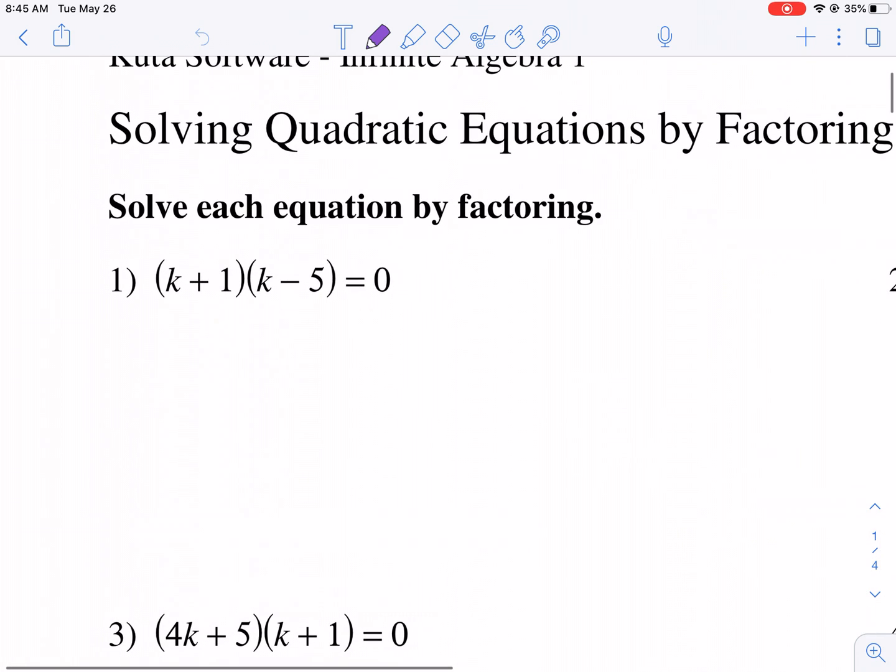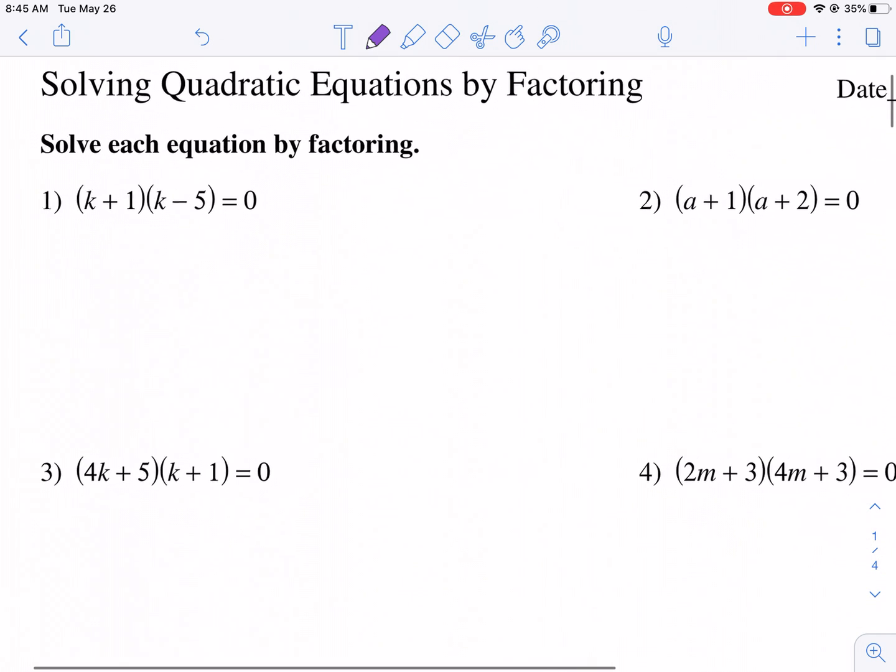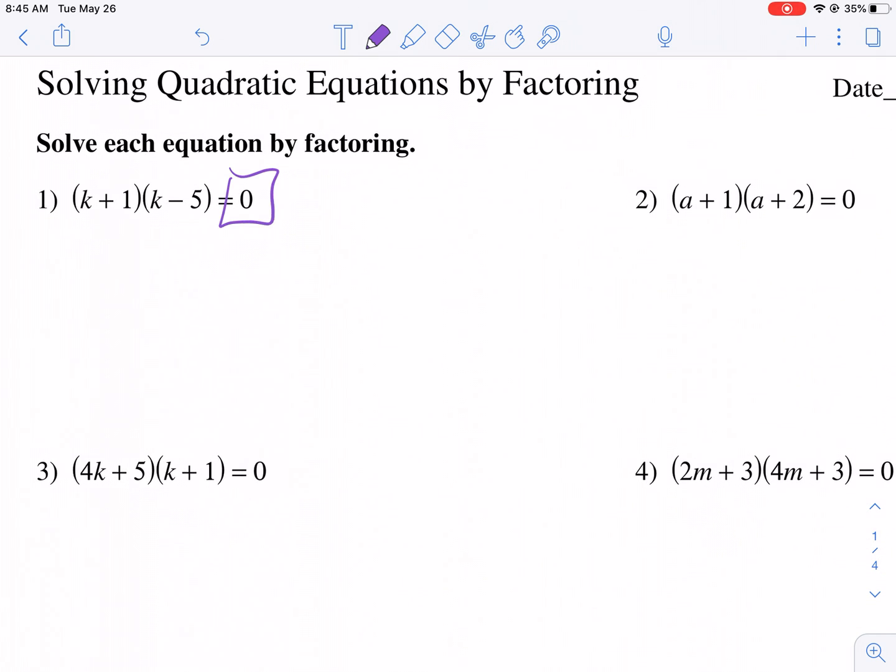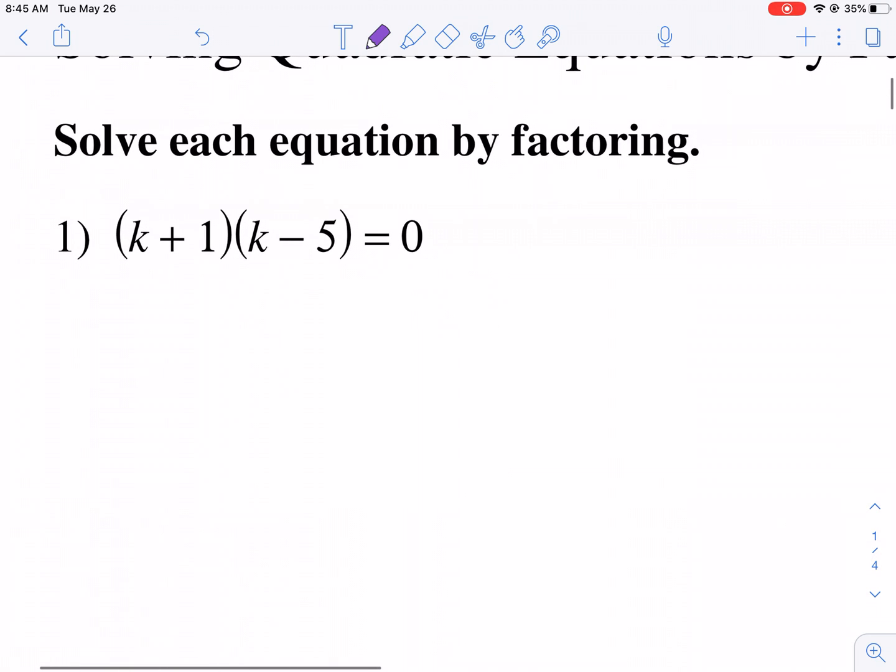As you see with number one, we have two binomials here being multiplied together to get zero. This is very common practice, and there's a lot of reasons why we set it equal to zero. But the bottom line is we need to make this a true statement.